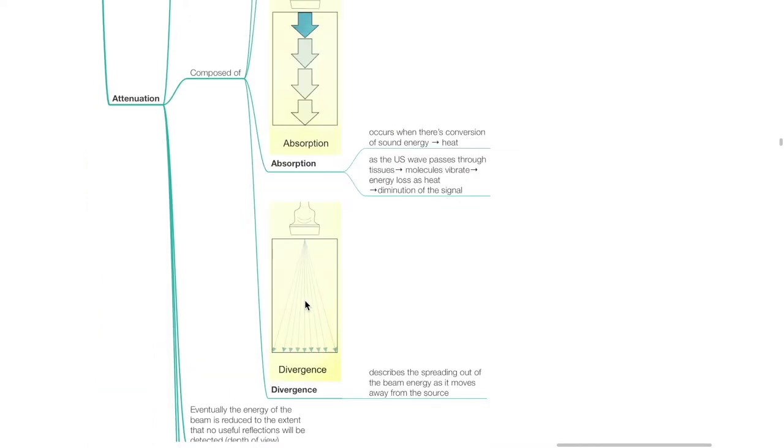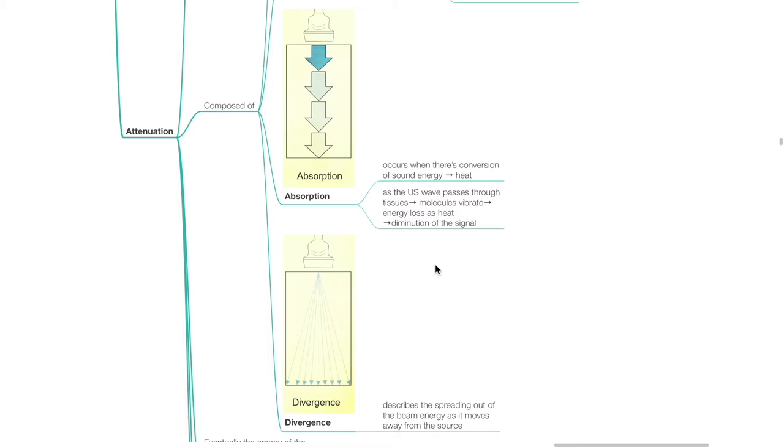Ultrasound absorption occurs when there is conversion of sound energy to heat. As ultrasound waves pass through tissues, the molecules vibrate, energy is lost as heat, and there is diminution of the signal. Ultrasound divergence describes the spreading out of the beam energy as it moves away from the source. Eventually the energy of the beam is reduced to the extent that no useful reflections will be detected. Total attenuation equals attenuation coefficient times depth. For each unit of depth, more ultrasound signal strength is lost.